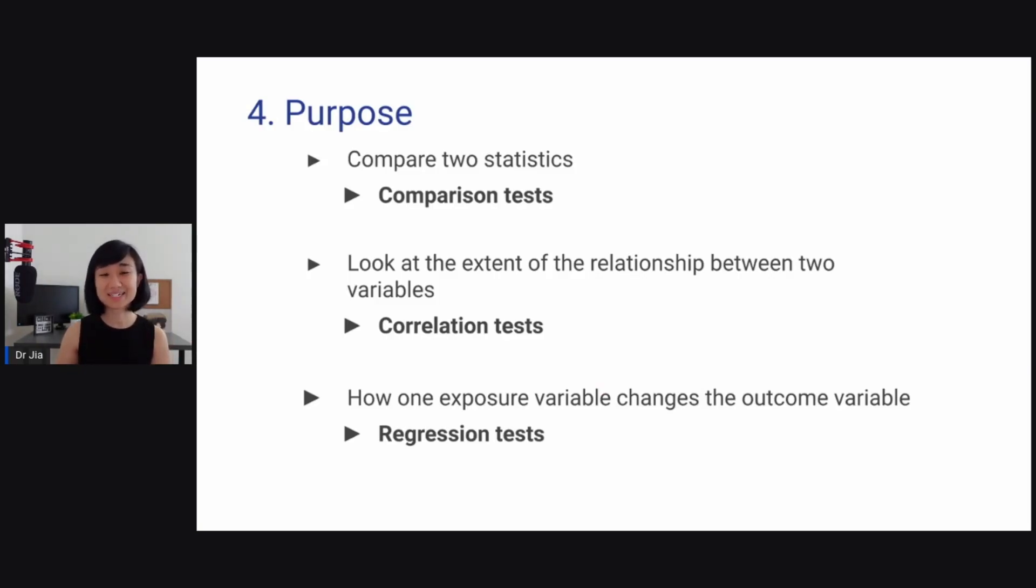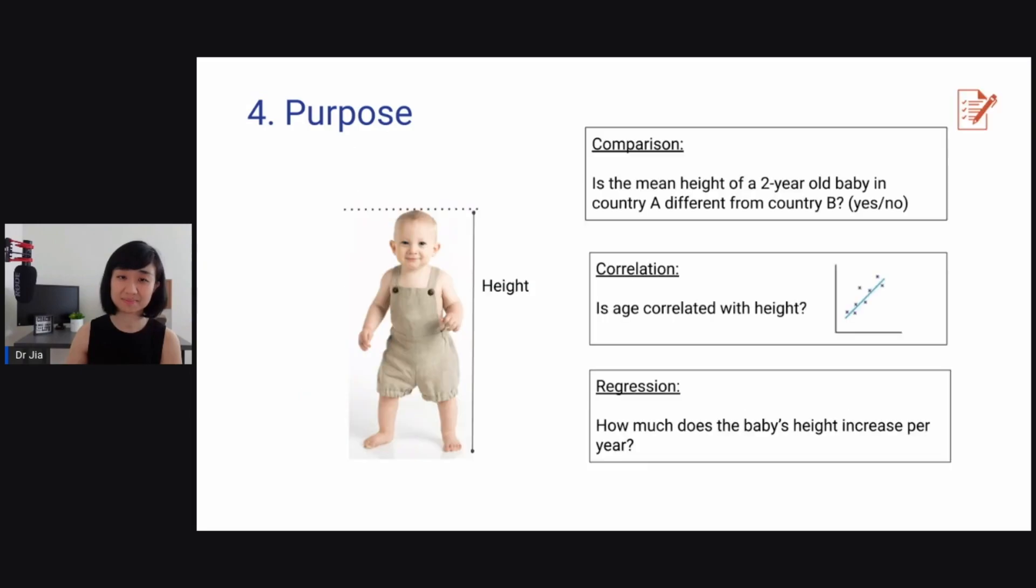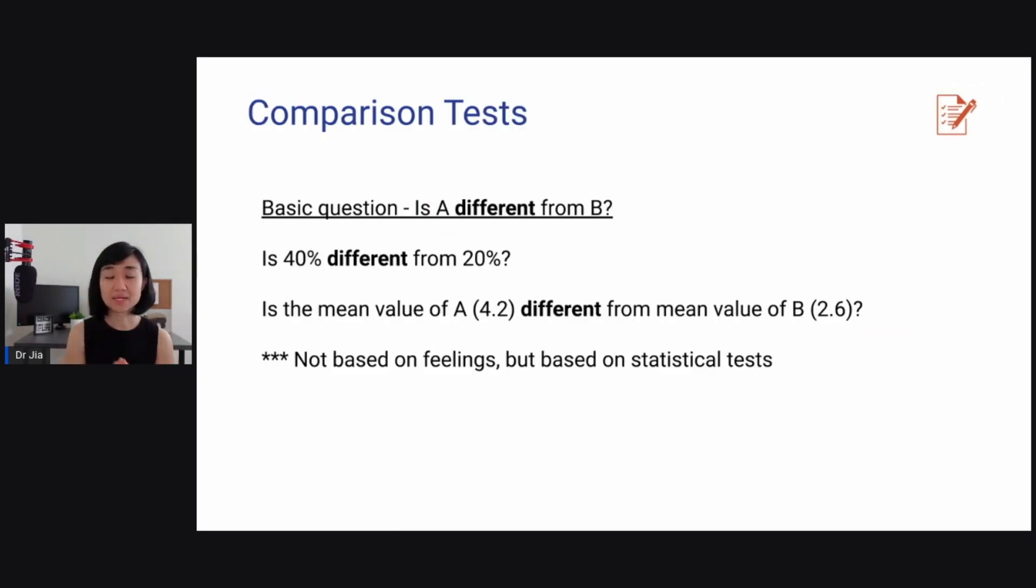The fourth one, purpose. Compare two statistics, is called comparison tests. Looking at the extent of relationship between the two variables, we call it correlation tests. And when we are looking at how an exposure variable changes the outcome variable or how one variable predicts the other, it's called regression tests. And I like to show this as an example so it's much more concrete. And the first one is comparison. Is the mean height of a two-year-old baby in country A different from country B? You're just saying A versus B. Is there a difference? Correlation is a bit further. Is age correlated with height? And then as a regression, it's even deeper. How much does the baby's height increase per year?